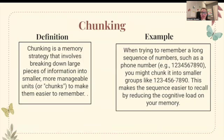Chunking is a memory strategy that involves breaking down large pieces of information into smaller, more manageable units or chunks to make them easier to remember. For example, when trying to remember a long sequence of numbers such as a phone number, you might chunk it into smaller groups. So if your number is 1234567890, you would group it into 123, 456, 7890. This makes the sequence easier to recall by reducing the cognitive load on your memory.